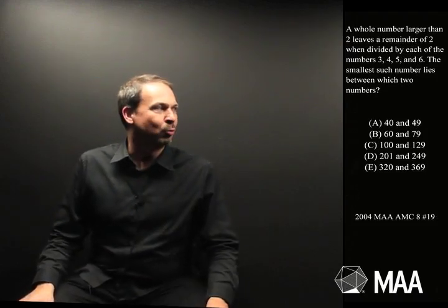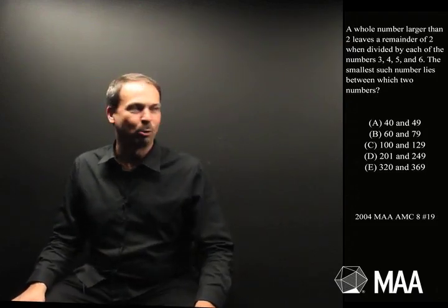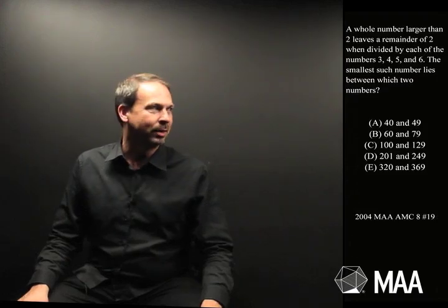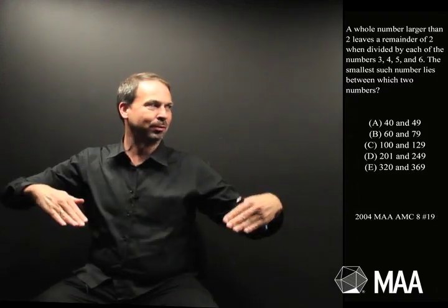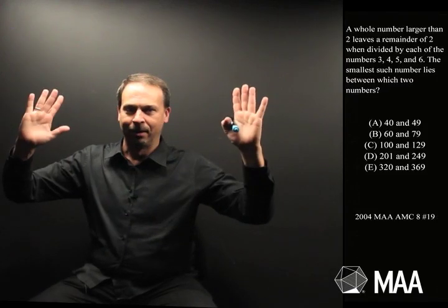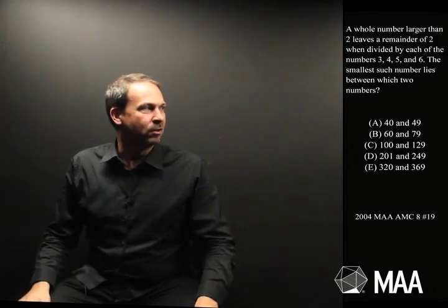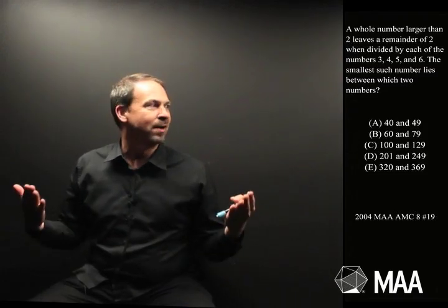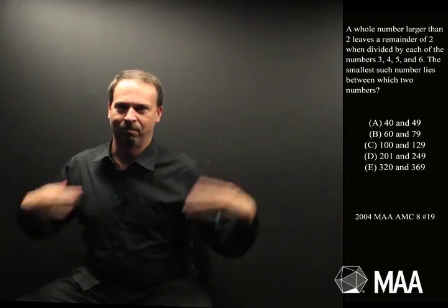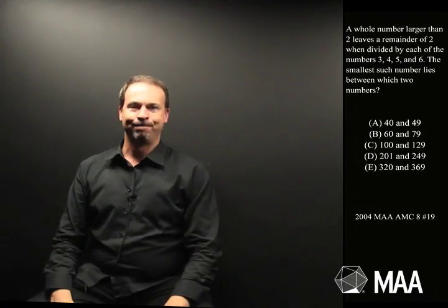The smallest such number lies between which two numbers? Between 40 and 49, between 60 and 79, and so on. We've got all these ranges of numbers. Alright, so I've got a number that leaves a remainder of 2 when divided by each of 3, 4, 5, and 6. I basically want to find the smallest of such numbers. Okay, can I do it?